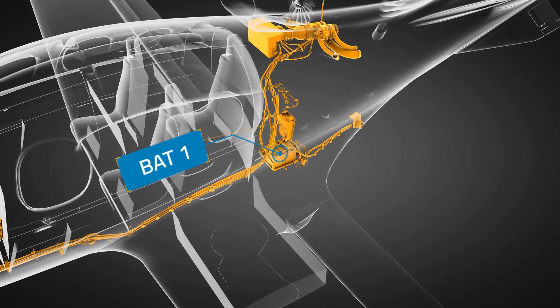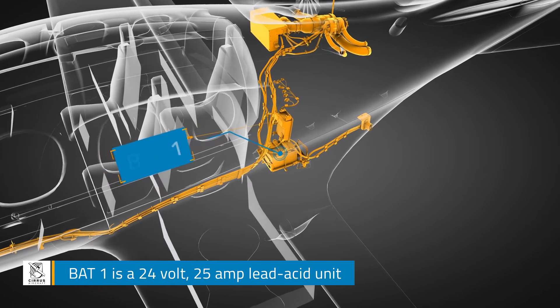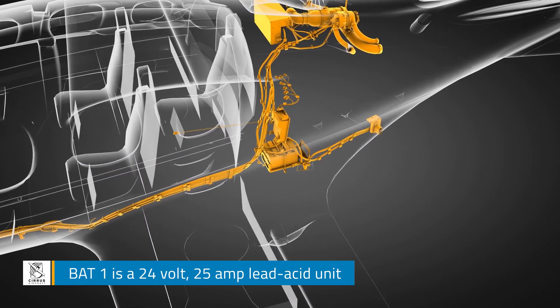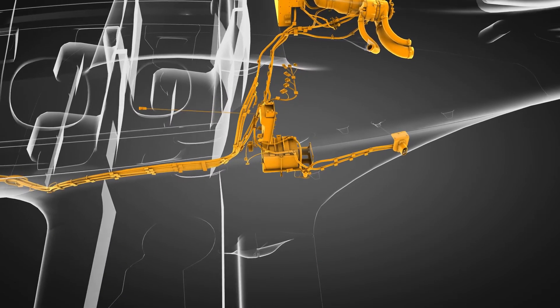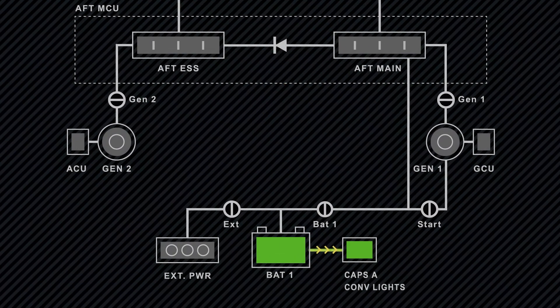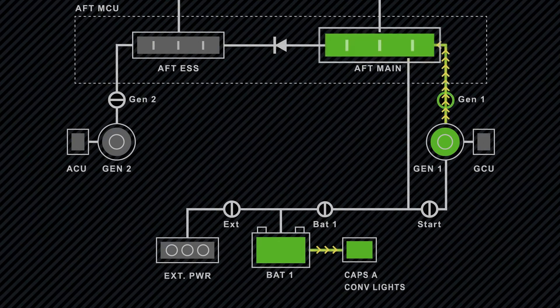Along with two generators, the Vision SF50 is equipped with two batteries. Battery 1 is a 24-volt, 25-amp lead-acid unit mounted behind the left-hand cabin bulkhead underneath the baggage floor. It is charged by Gen 1 via the main bus.